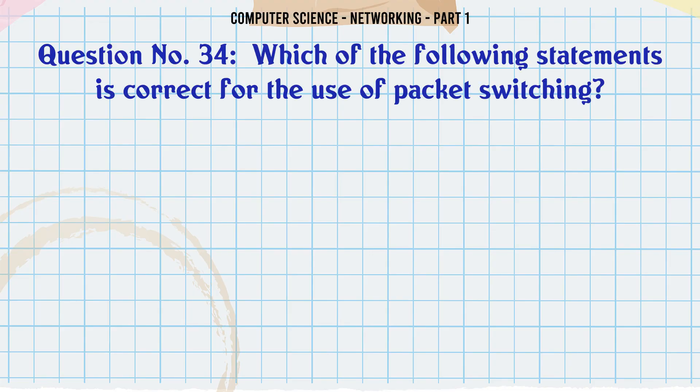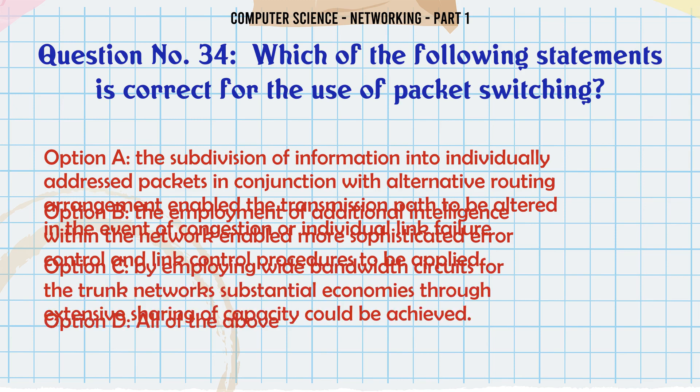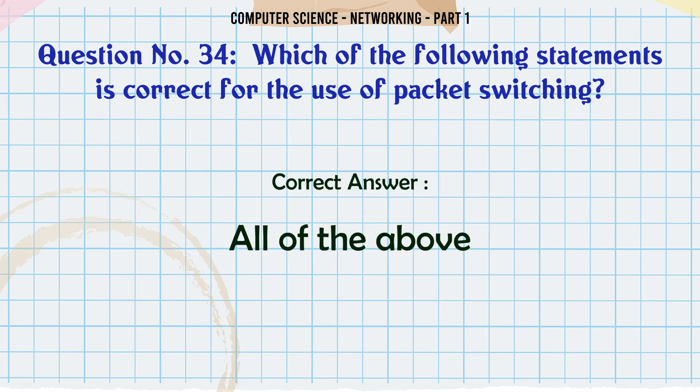Which of the following statements is correct for the use of packet switching? A. Subdivision of information into individually addressed packets in conjunction with alternative routing arrangements enabled the transmission path to be altered in the event of congestion or individual link failure. B. The employment of additional intelligence within the network enabled more sophisticated error control and link control procedures to be applied. C. By employing wide bandwidth circuits for the trunk network, substantial economies through extensive sharing of capacity could be achieved. D. All of the above. The correct answer is: All of the above.